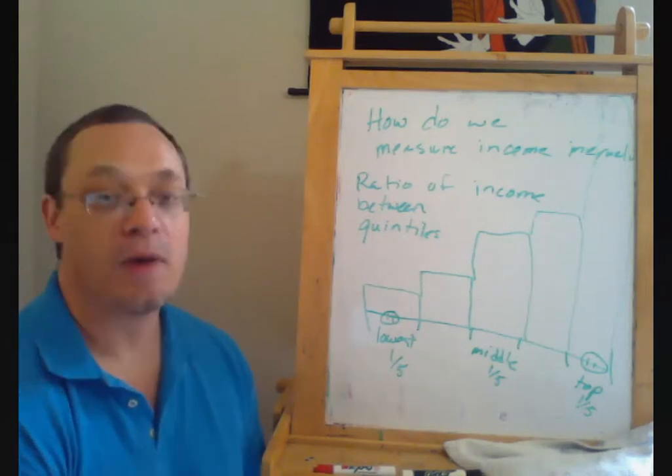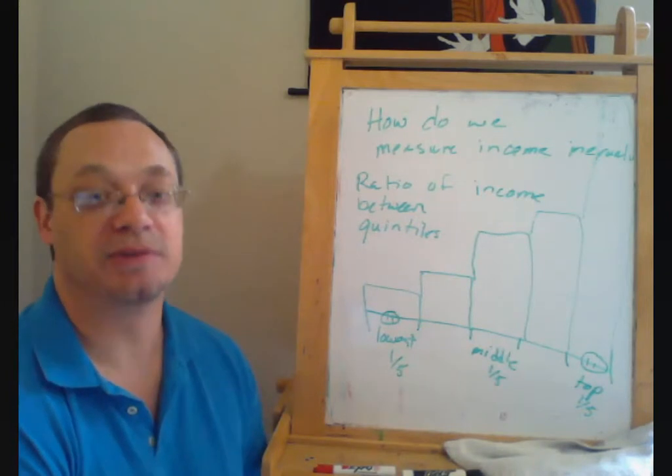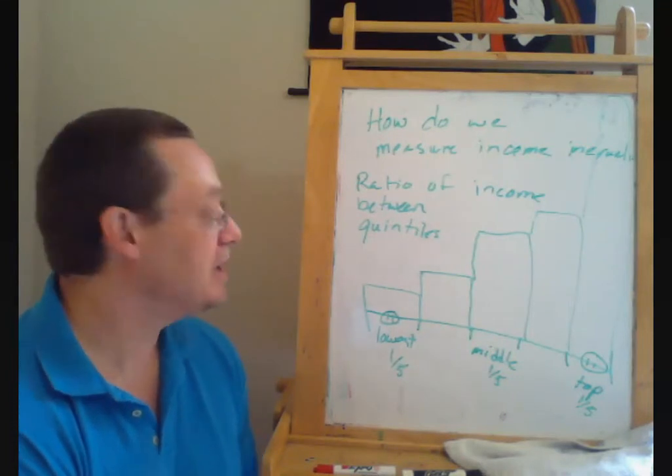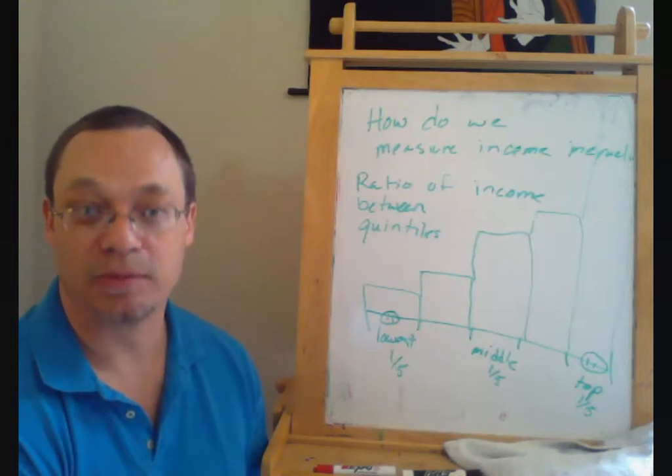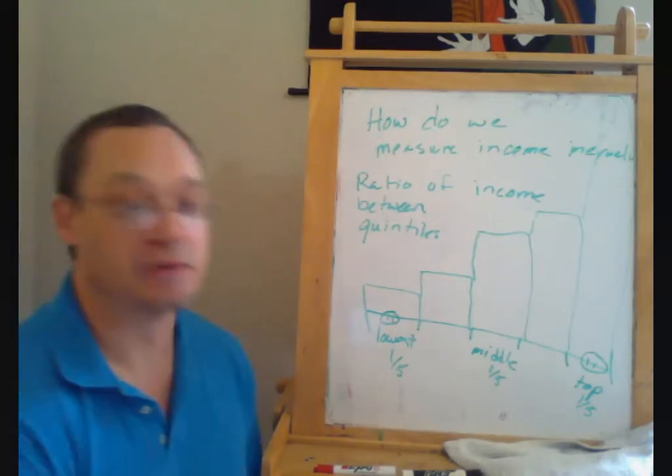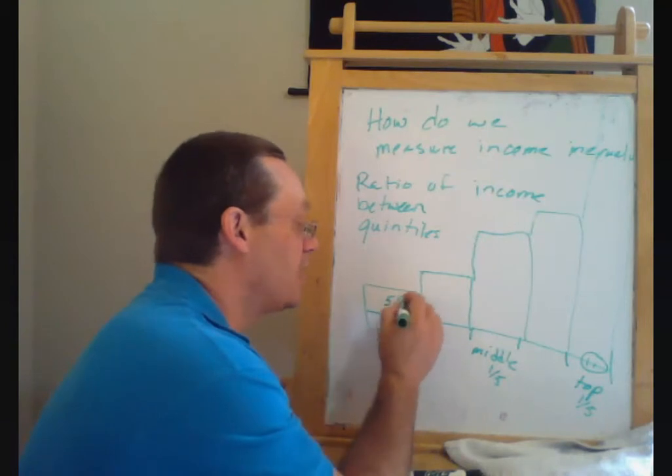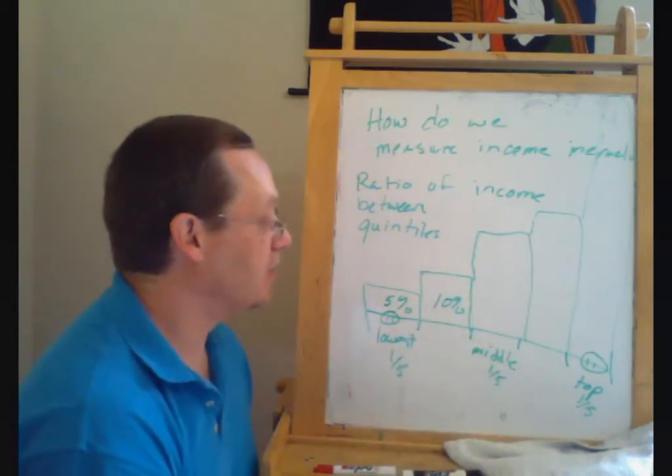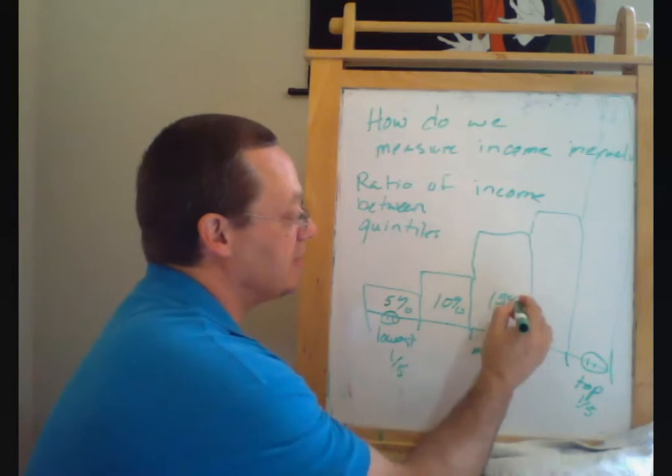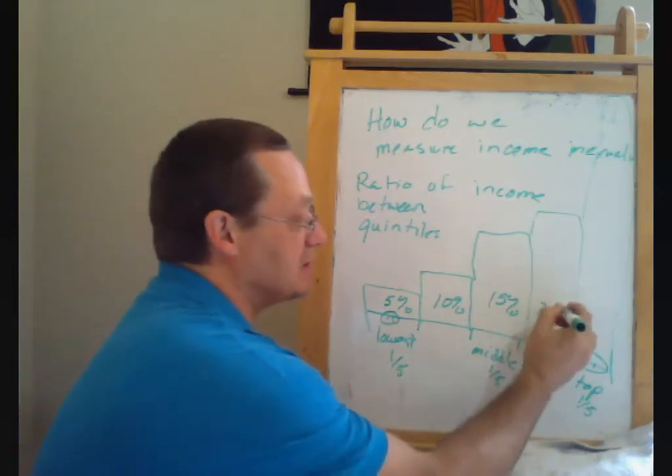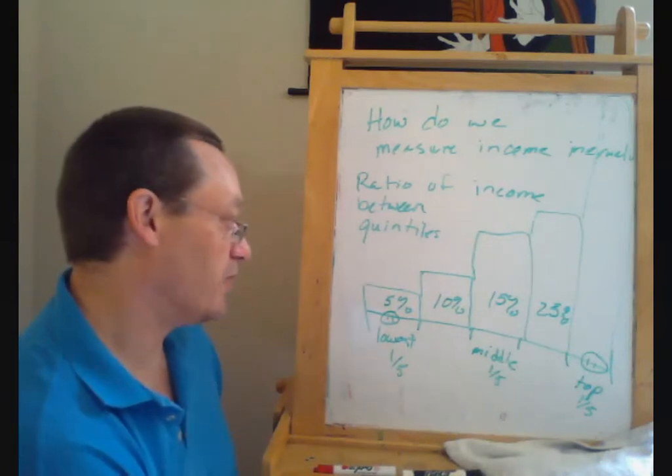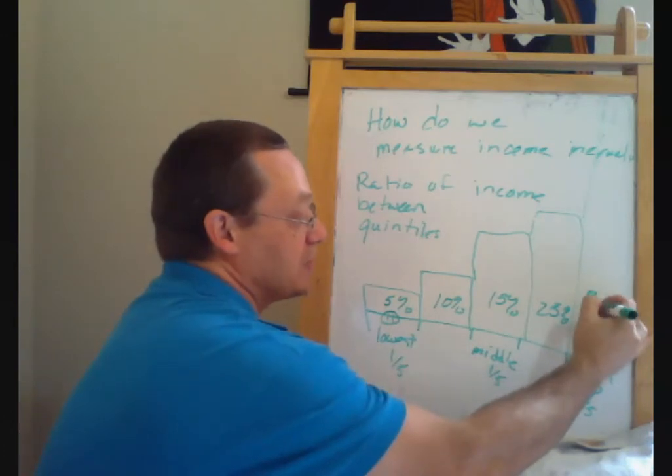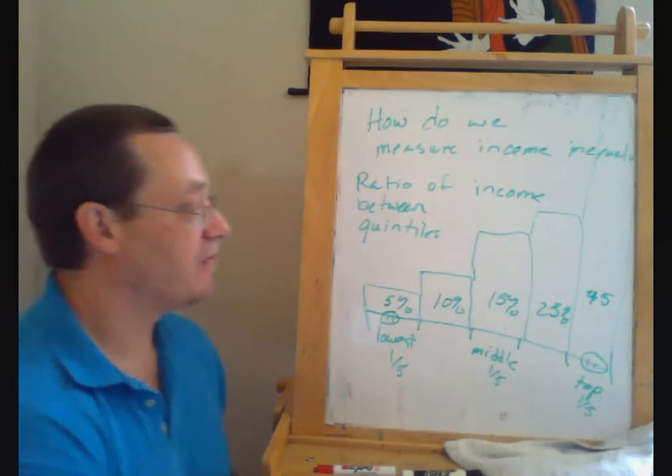So that's one of the common measures out there. The other is often what percentage of total national income goes to each quintile. And if the income distribution were completely flat, each fifth of the population would earn 20% of national income if it was completely proportional. But we might say, okay, maybe the lowest one-fifth earned 5%, and the next one earns 10%, and this is 15%, and this is 25%, and then 45%, if I've done my math right.